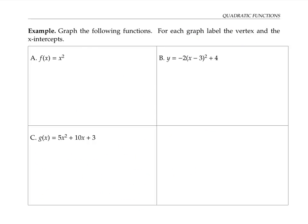Next, let's practice graphing quadratic functions. The graph of a quadratic function always looks like a parabola, which is this kind of shape — it can be opening upwards or it can be opening downwards. The point at the tip of the parabola is called the vertex. Locating the vertex and the x-intercepts, if there are any, can be a handy way to draw the graph.